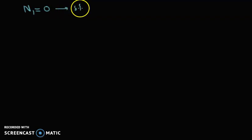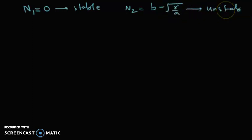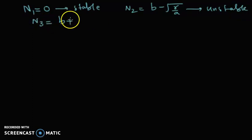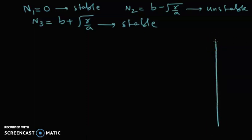In the previous video we saw that n1 equal to 0 was a stable fixed point, n2 equal to b minus square root of r over a was an unstable fixed point, and n3 equal to b plus square root of r over a was a stable fixed point. Now if we want to draw the so-called phase line, then the phase line should look like this.